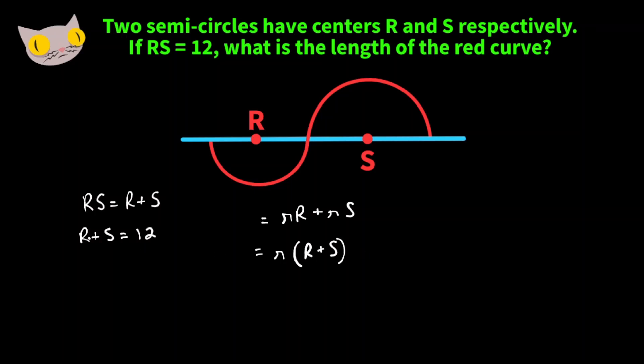We know that R plus S is equal to 12, so our answer will be 12 pi. That's the length of the red curve.